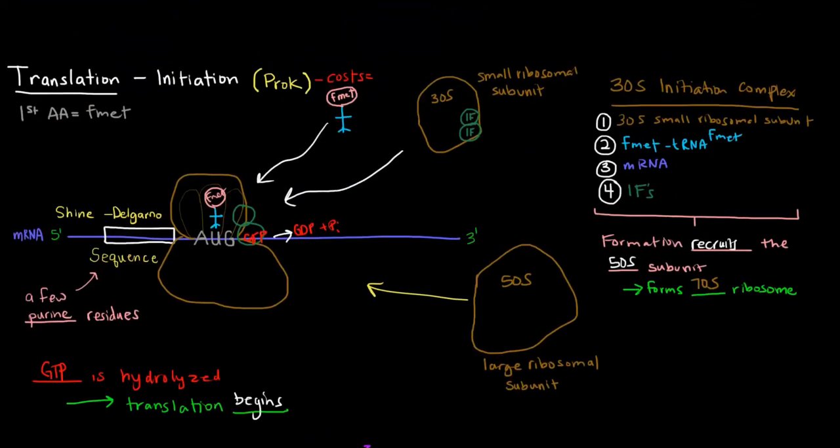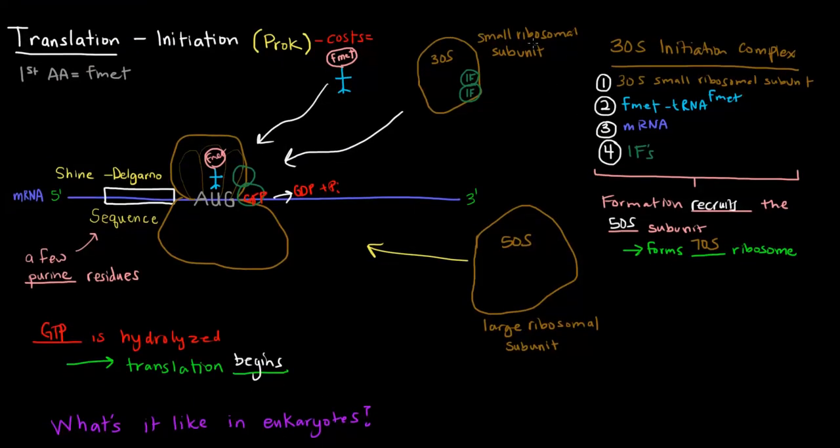Otherwise, it's pretty much the same. You form the initiation complex with the small ribosomal subunit, the initial tRNA, the mRNA, and some initiation factors, and then that'll recruit the larger ribosomal subunit. And once that's there, you hydrolyze the GTP, and then translation begins. Hope that video was helpful.